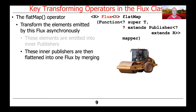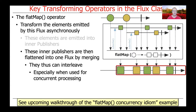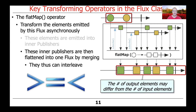These inner publishers are then flattened into one Flux by doing a merging operation. What gets returned as a result can potentially interleave, which is particularly true when used for concurrent processing with the flatMap concurrency idiom. One of the interesting things about flatMap is that the number of output elements can be different from the number of input elements.